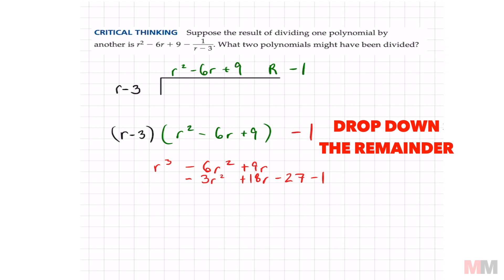And all we got to do from here is combine like terms, and I get r cubed minus 9r squared plus 27r. Negative 27 minus 1 is negative 28. That is going to represent my dividend.